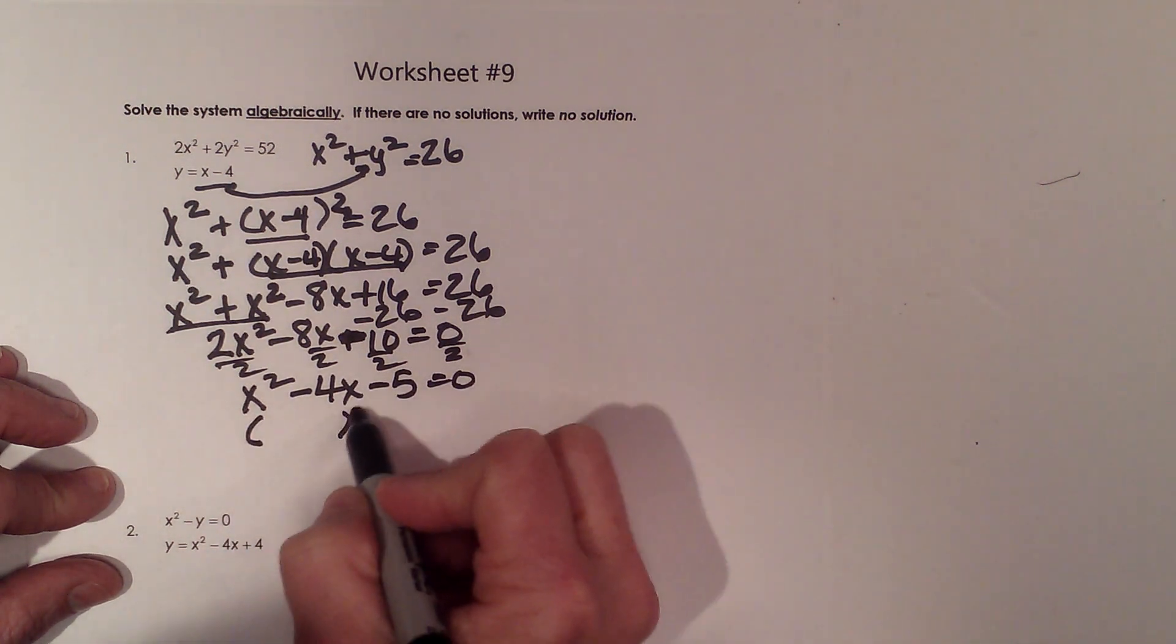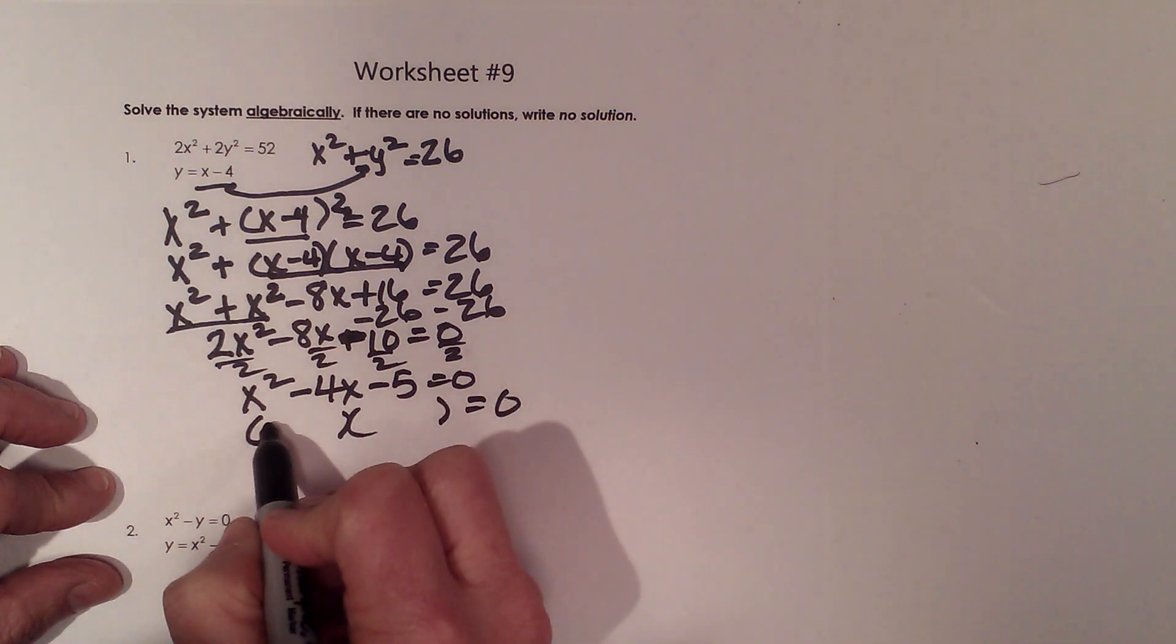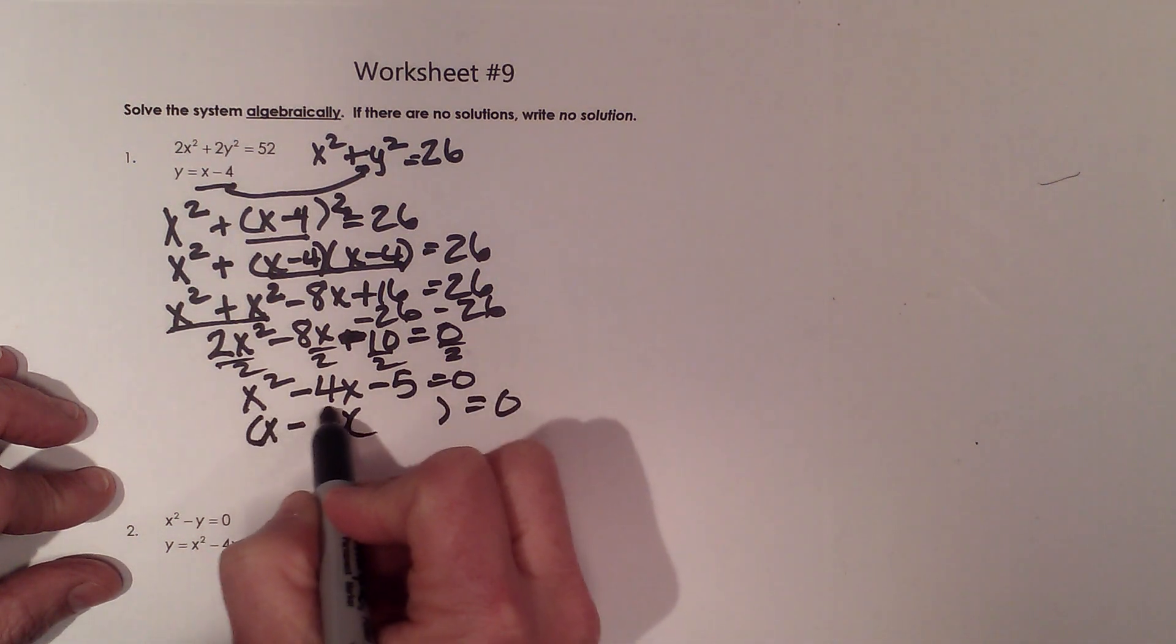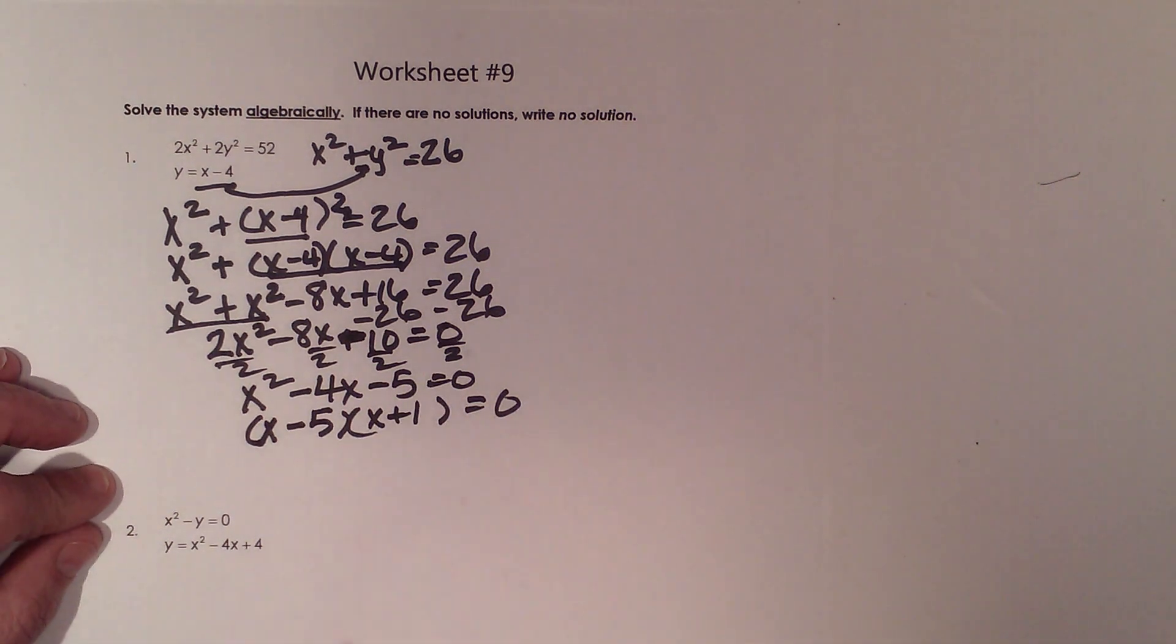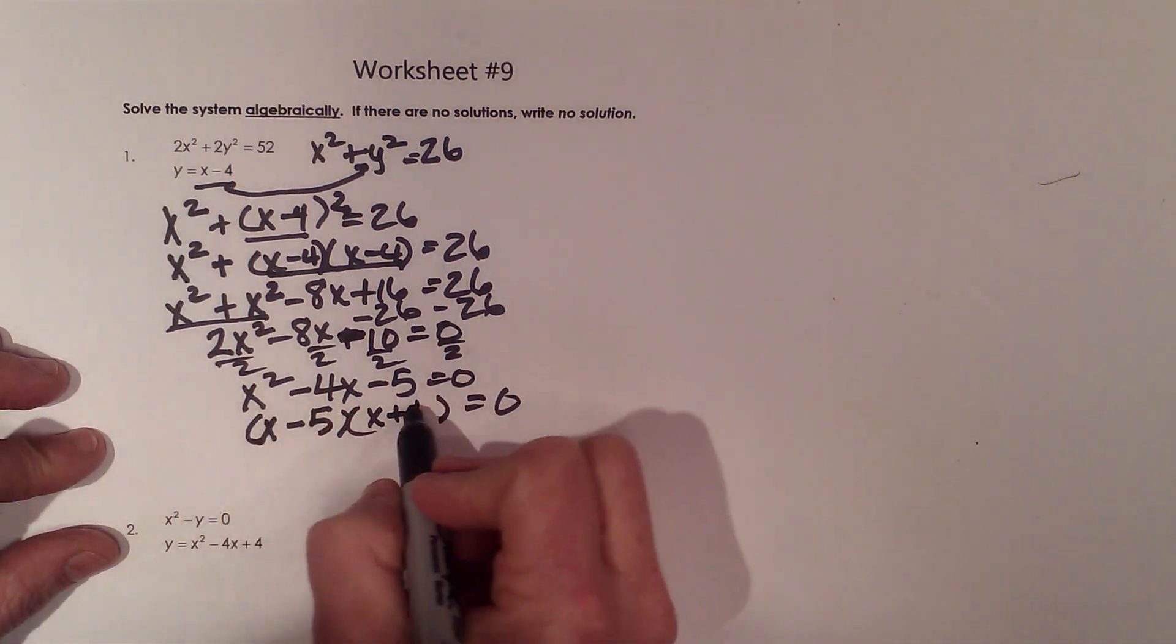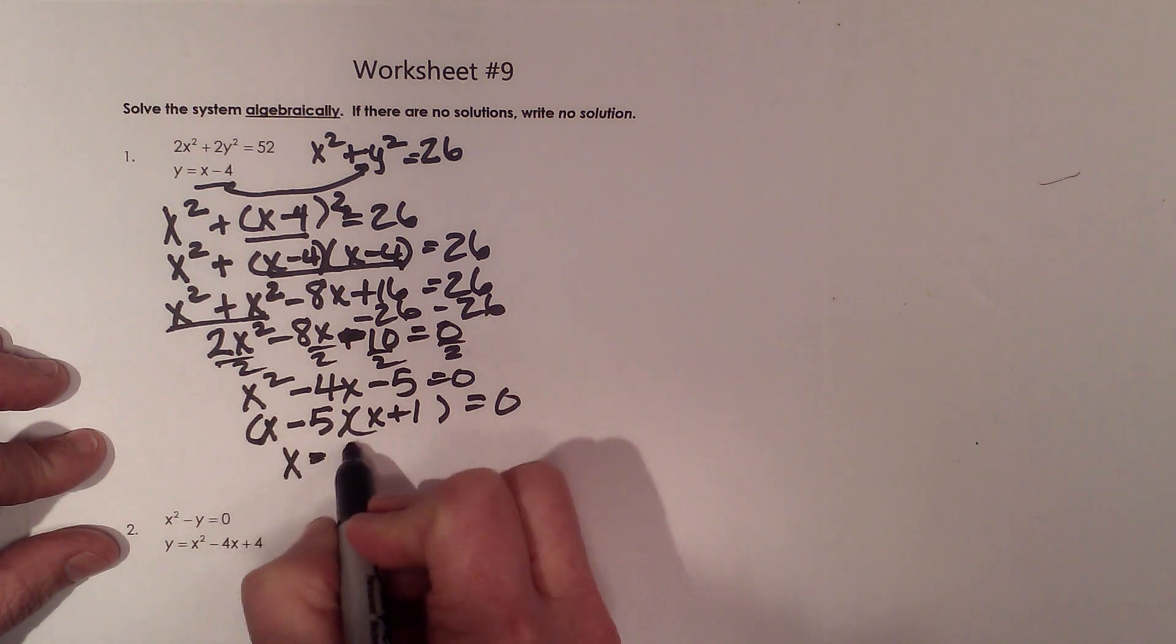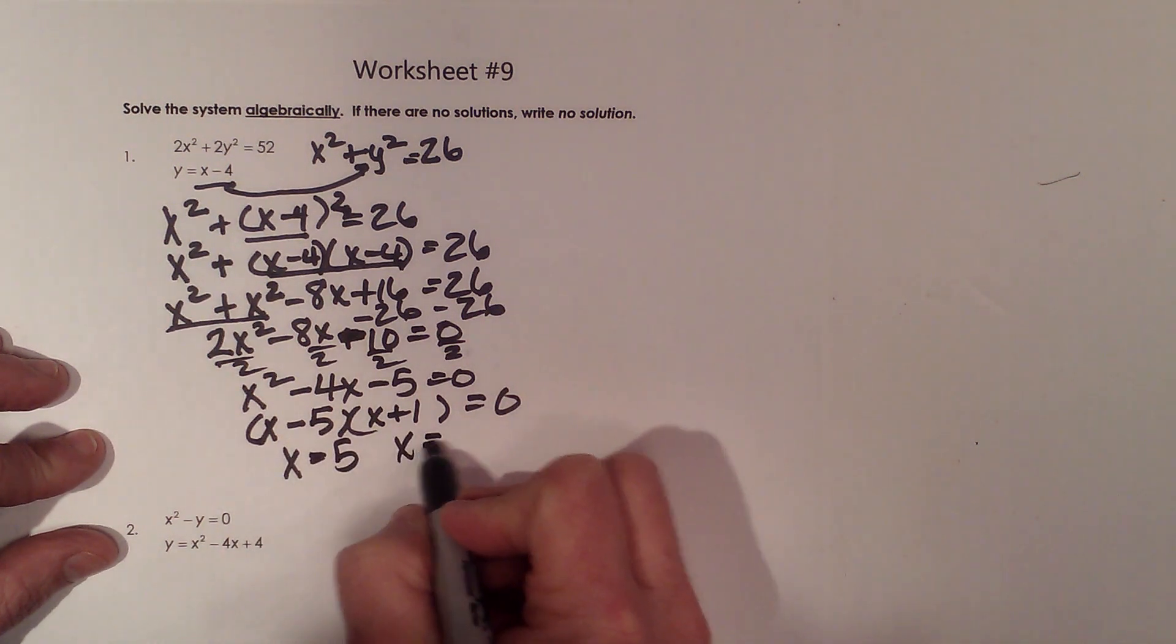I'm now going to factor the quadratic, and this becomes (x - 5)(x + 1). So I've got it down. All I have to do now is solve. So x has to be 5 or -1.